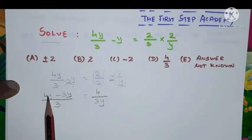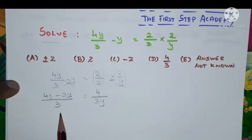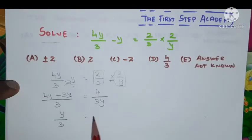Look at here. 4y minus 3y is y divided by 3 which is equal to 4 divided by 3y.